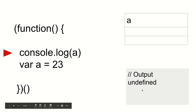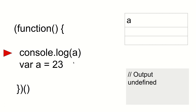So that is variable hoisting. If you really want console.log(A) to output 23, you have to put the assignment statement above the console.log. Otherwise, A will receive the value of 23 only after the console.log has already passed, and we will never get to see that 23. So that was the first case study on variable hoisting.